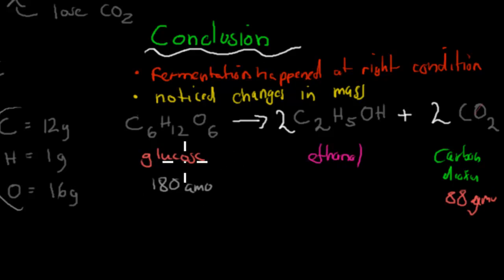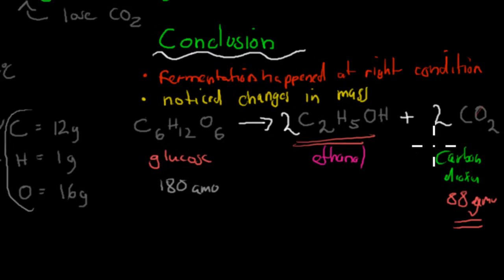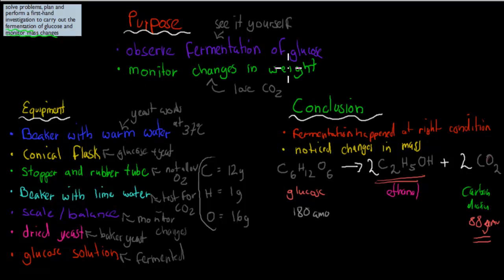So we start with 180, but if we ferment it, we lose 88 of those 180. What we've got left over is what we have here in ethanol. That's why we would have noticed those changes in mass. I hope that was useful. If you want to go over that animation, you can go over it again.